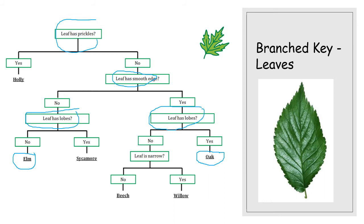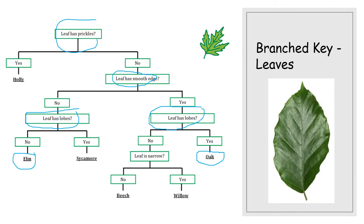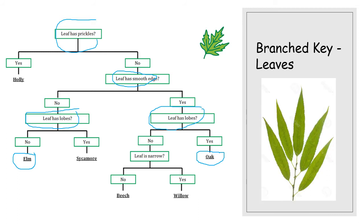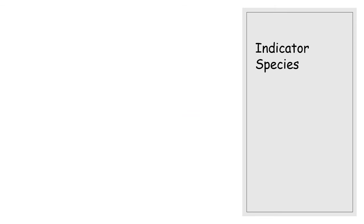Because we've already gone through 'leaf has prickles' and 'leaf has a smooth edge,' we've already separated elm and sycamore from beech, willow, and oak. So I can ask the same question 'leaf has lobes' on both branches, allowing us to make distinctions. You can ask the same questions on different branches of your branching key. For instance, if talking about people in the class, the first statement could be male or female, and then the next question for both groups could be eye colour — blue eyes or brown eyes — and that would work.